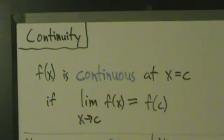In other words, if you take the limit as x goes to c of f(x), and if that's the same thing as the actual value of the function at c, then your function is continuous.